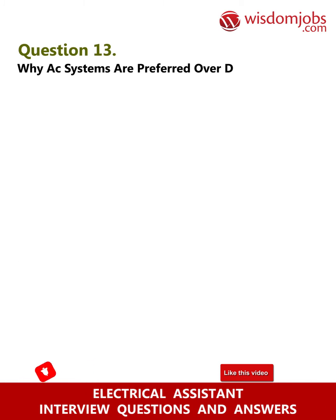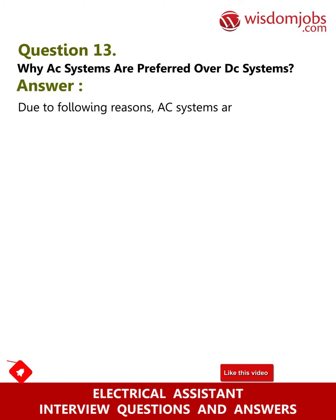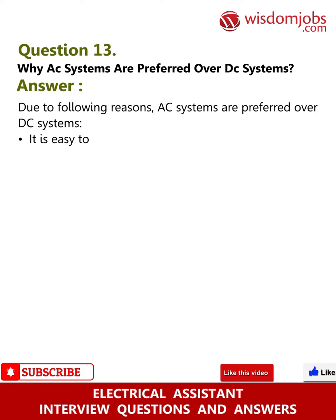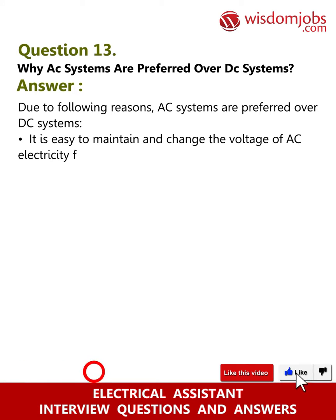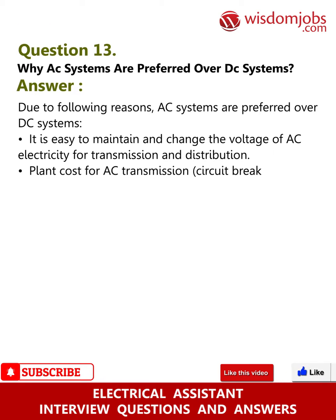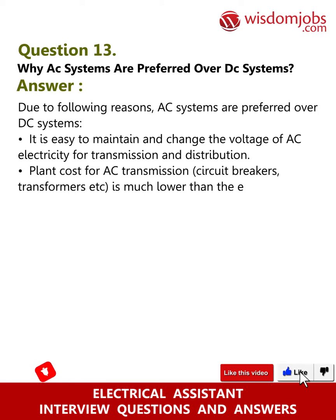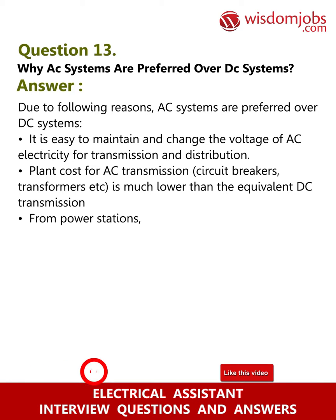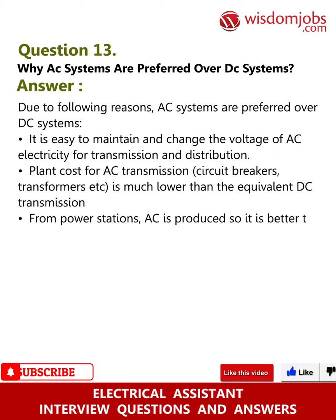Question 13: Why are AC systems preferred over DC systems? Answer: Due to the following reasons, AC systems are preferred over DC systems. It is easy to maintain and change the voltage of AC electricity for transmission and distribution. Plant cost for AC transmission — circuit breakers, transformers, etc. — is much lower than the equivalent DC transmission.